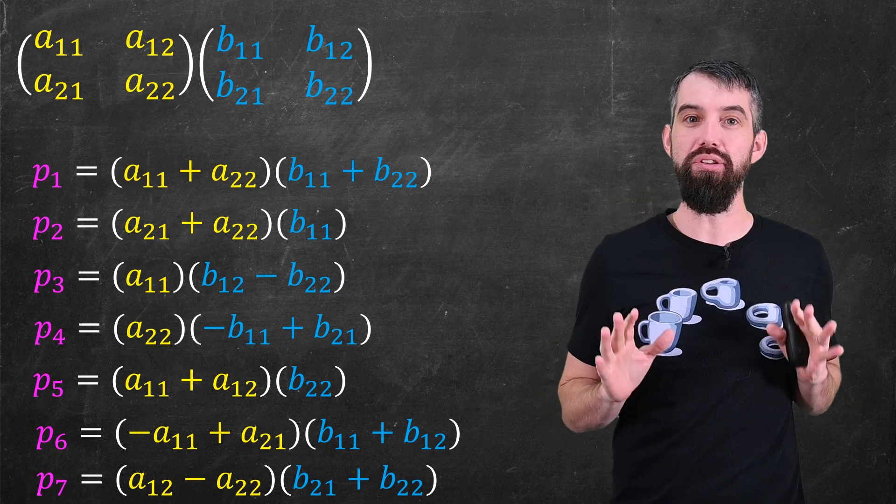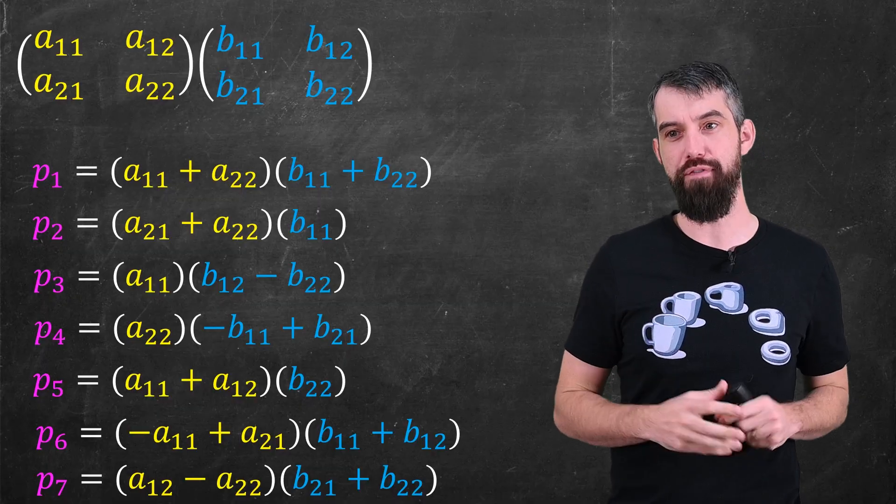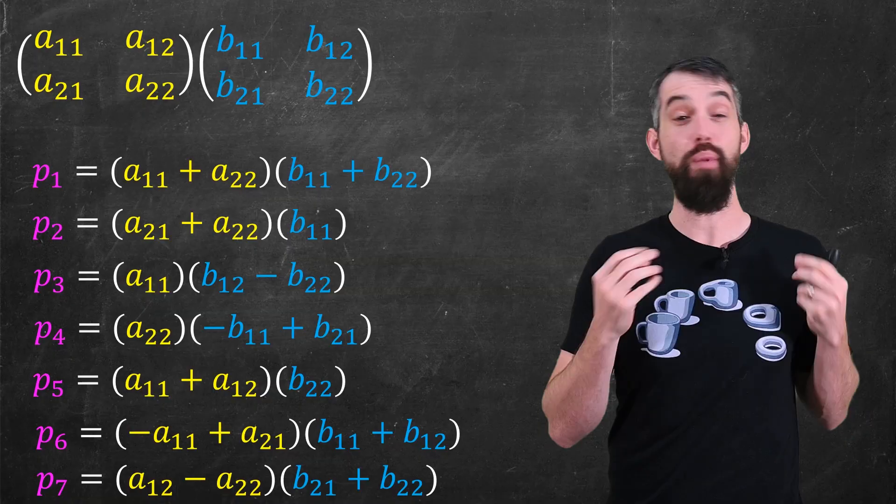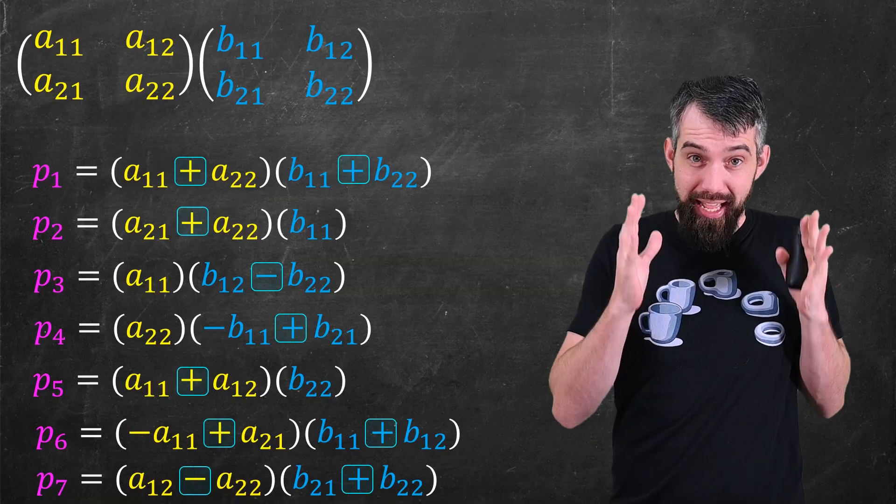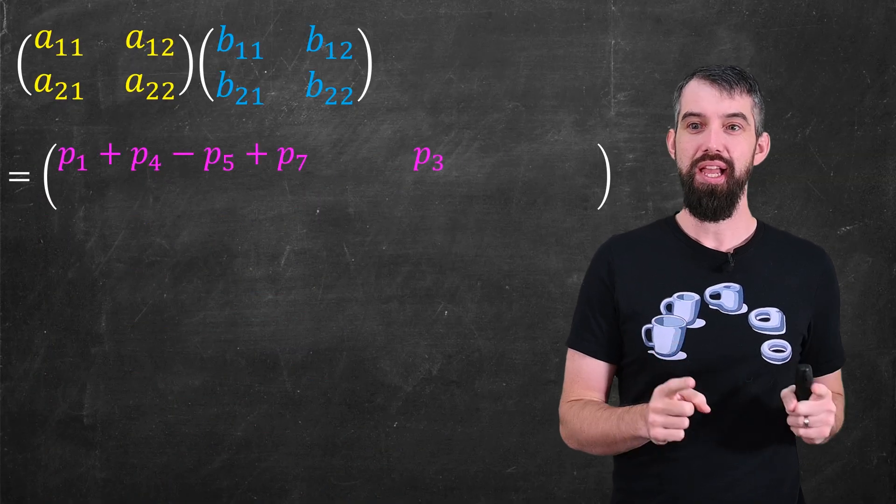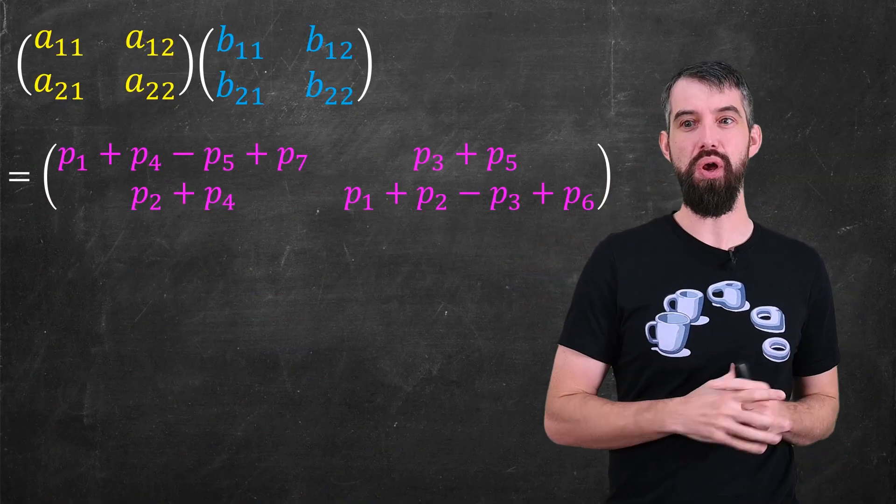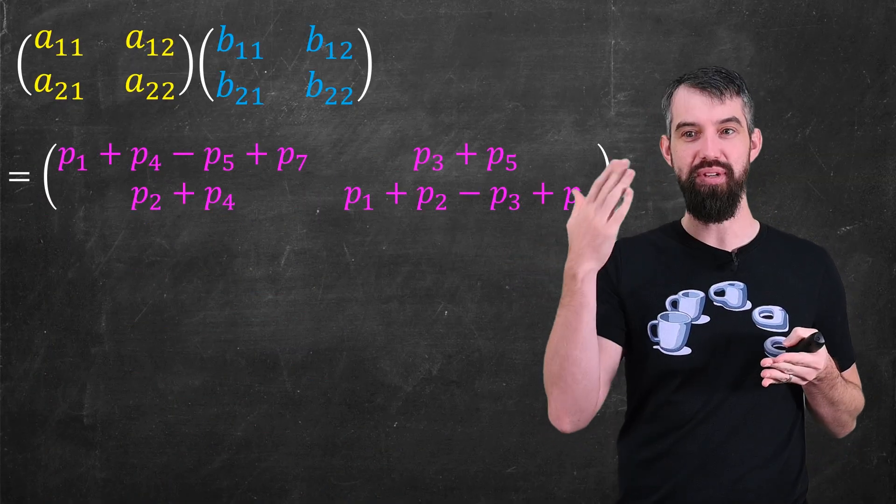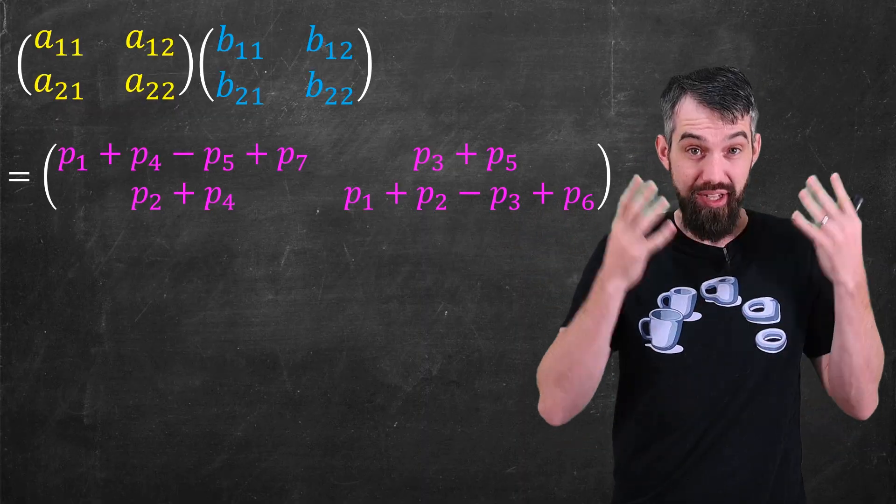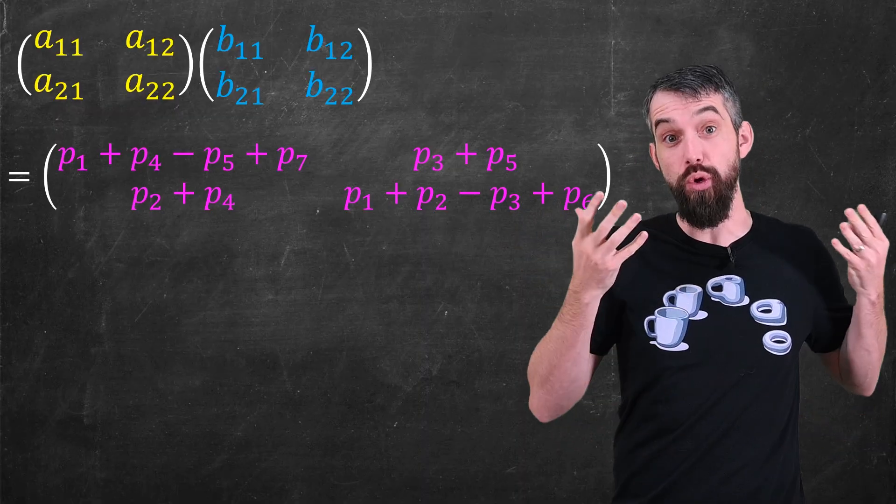And look, the details don't matter, but what I really want to focus on is that there are seven multiplications here, and then there's also a whole bunch of additions that are appearing, but mostly it's the seven multiplications that I want to do. Then it turns out, if you put this particular combination of the p1 down to the p7, you add them up in this particular way, you get the same answer, the same answer for matrix multiplication that you always do.